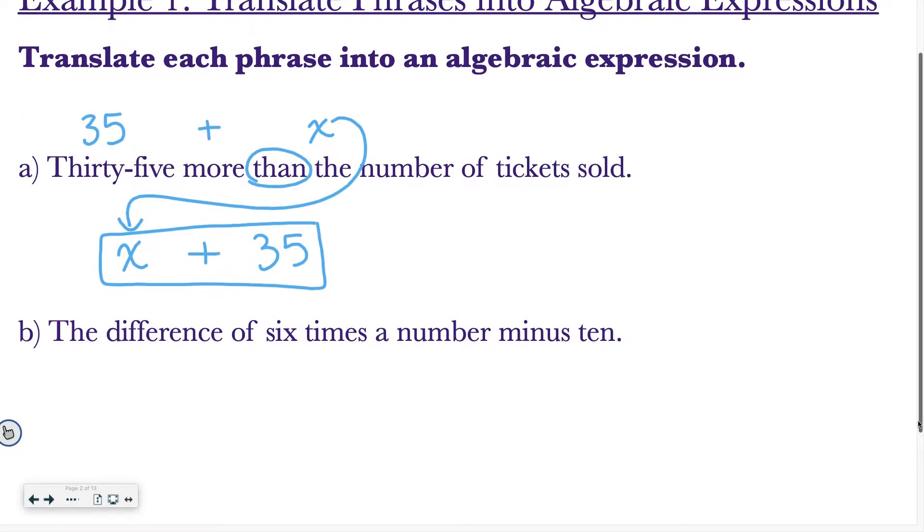Letter B, the difference of six times a number minus 10. So difference means minus, six times the number. I don't know what number that is, so I'm going to say six. I like to use X, so I'm just going to keep using X. So 6X minus 10. That's it. There's no than, so I don't have to change the order. That's all I have to write, 6X minus 10.